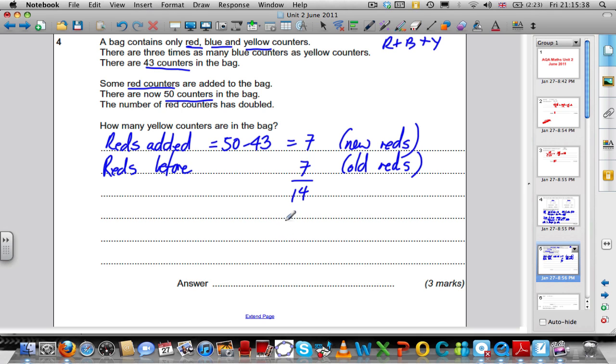Let's see if we can use that information. There are 50 counters in the bag, and 14 of them are red now. So 50 subtract 14 is equal to 36. There are 36 counters now in the bag. But we know there are 3 times as many blues, so the ratio of blue to yellow is 3 to 1.